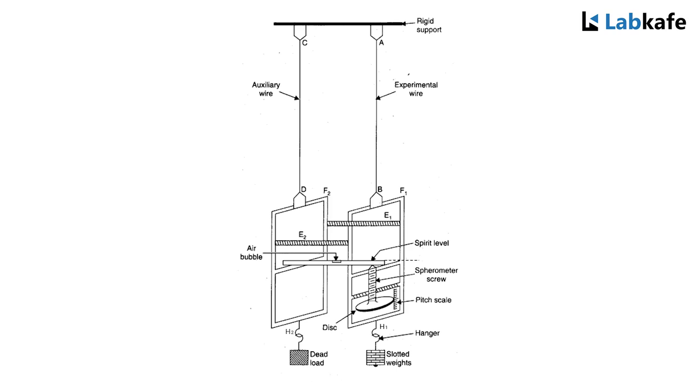If there is any relative displacement between the two frames, the spirit level no longer remains horizontal and the bubble of the spirit level is displaced from its center. A constant weight or dead load is suspended from hook H2 of frame F2 attached to the auxiliary wire CD, which keeps the wire taut.